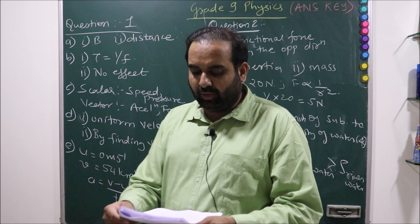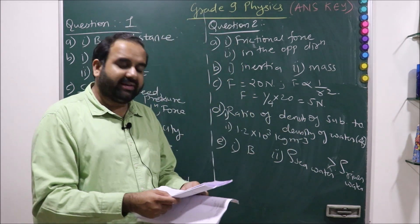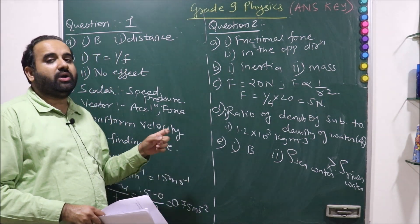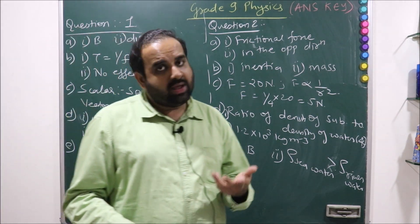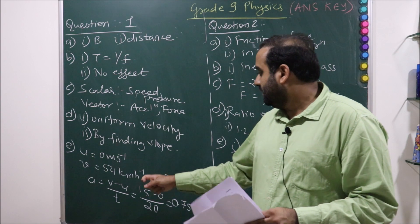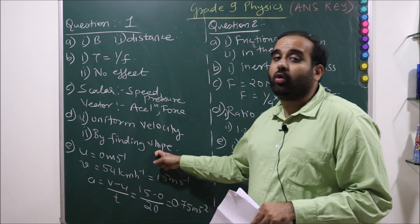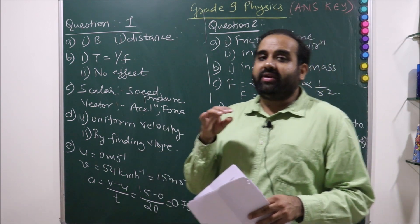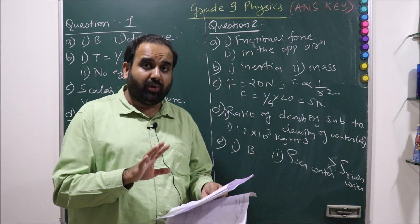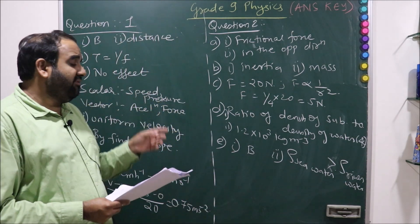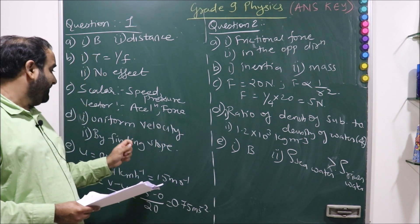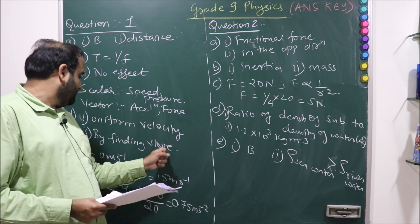The motion of the body is represented by the D-T graph. State the type of motion. It is a linear curve, so definitely it will be nothing but uniform velocity or uniform motion. How can the velocity of body be determined from the above graph? By finding the slope. When they say from the graph, it is specifically mentioned, so the answer will remain finding the slope.